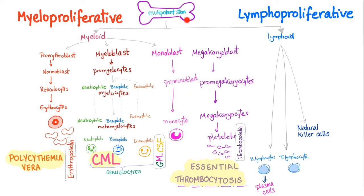There are myeloproliferative disorders and lymphoproliferative disorders such as leukemia and lymphoma. In the myeloproliferative disorders, all of the cell lines are increased, but one of them is super dominant. In polycythemia vera, lots of red blood cells. In CML, lots of neutrophils. In essential thrombocytosis, lots of platelets. How about primary myelofibrosis? That is the topic of today's video.